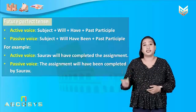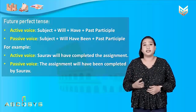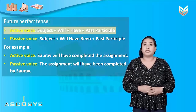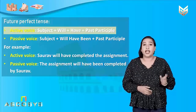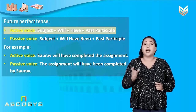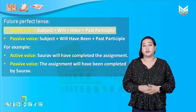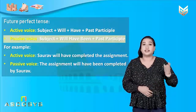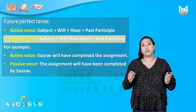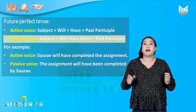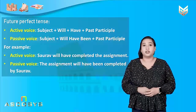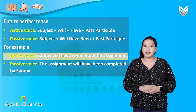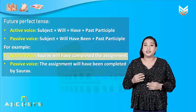Next, let us have a look at the future perfect tense. How will we write a sentence in active voice? We will take a subject, then add 'will', then 'have', and then a past participle. In the passive voice, we will take a subject, add 'will have been' to it, and then add a past participle.